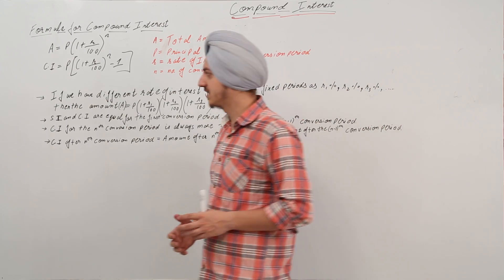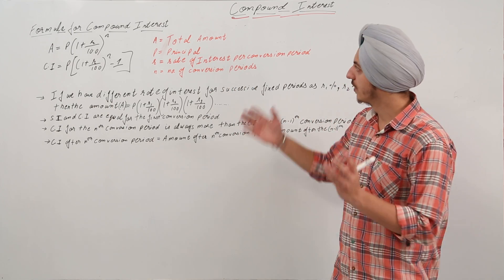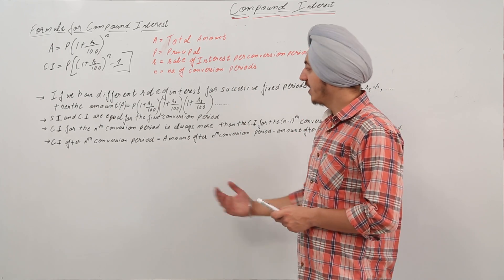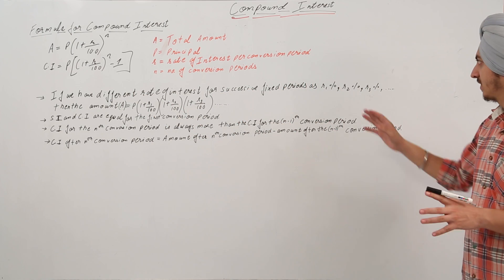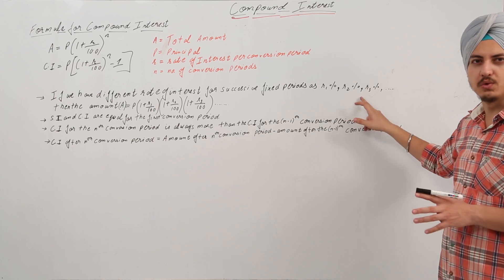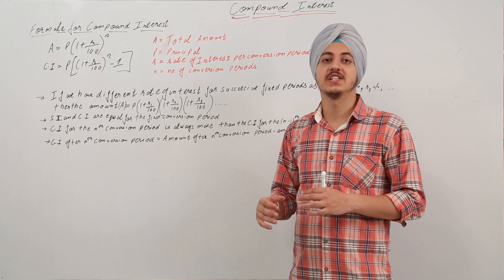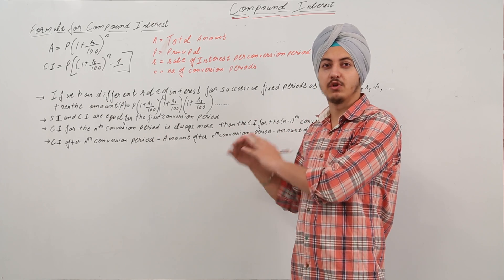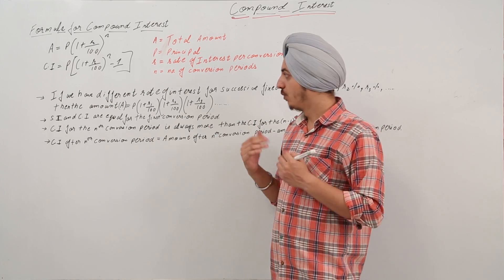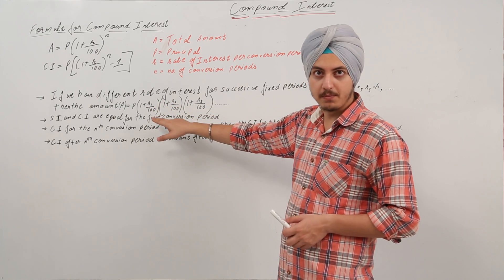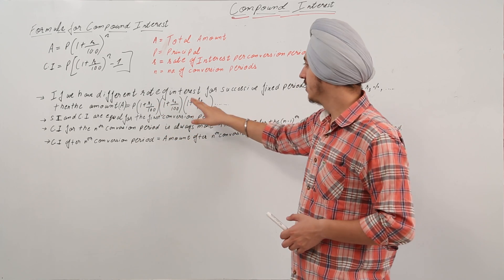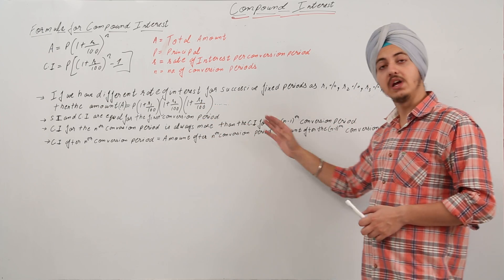We have a few other things we need to remember in order to solve questions for compound interest. If we have different rates of interest for successive fixed periods — R1, R2, R3, R4 — for example, the rate of interest for the first year is 10%, for the second year is 8%, and for the third year is 6%, then the total amount is equal to P into 1 plus R1 upon 100, into 1 plus R2 upon 100, into 1 plus R3 upon 100, and so on.